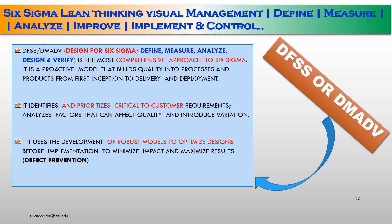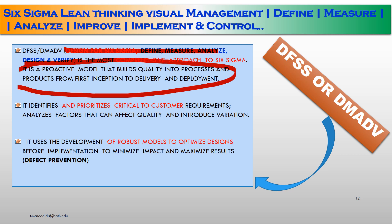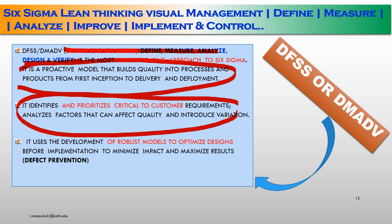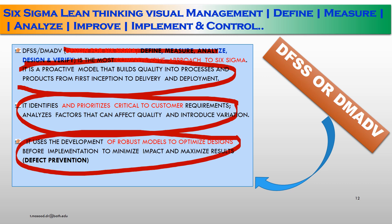DFSS or DMADV — Design for Six Sigma — define, measure, analyze, design and verify. It is the most comprehensive approach to Six Sigma. It is a proactive model that builds quality into processes and products from first inception to delivery and deployment. It identifies and prioritizes critical-to-customer requirements, analyzes factors that can affect quality and introduce variations, and uses robust models to optimize designs before implementation to minimize impact and maximize defect prevention.